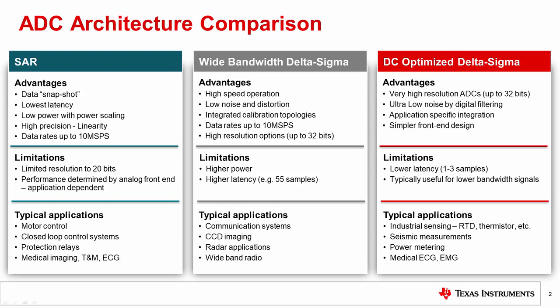Unfortunately, this distinction is not directly stated in the datasheet, and you need to infer the difference by looking at the internal digital filter type and the device sampling rate. From an applications perspective, the wide-bandwidth Delta-Sigma behaves closer to a SAR converter. Let's take a closer look at each category.